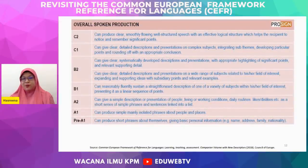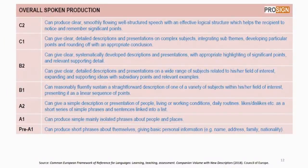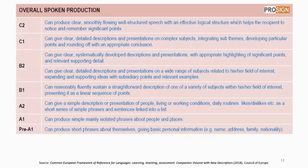In speaking, there are two skills: spoken interaction and spoken production. For the overall spoken production scale, at A1 level, users can produce simple, mainly isolated phrases about people and places. If teachers are interested in conducting a speaking activity — for example, describing an experience — there is also a specific skill for that which teachers can refer to.